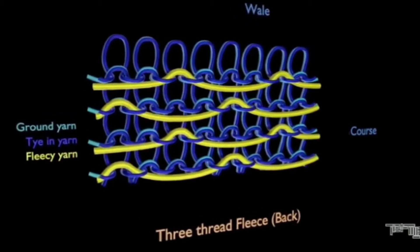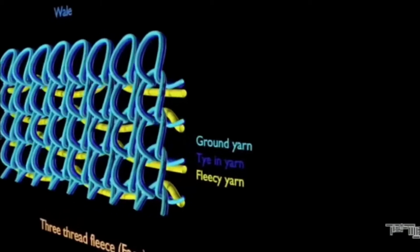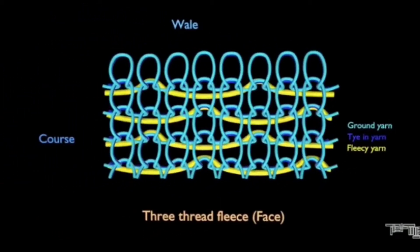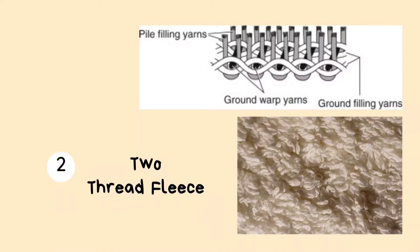Fleece fabric, often called sweatshirt fleece, is another popular material used to make loungewear and casual clothing like sweatshirts and sweatpants, jacket, jogger, shorts, etc.